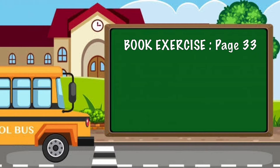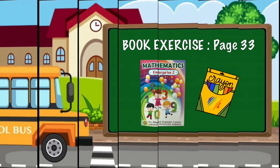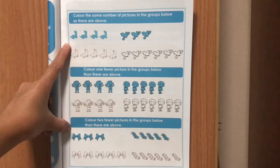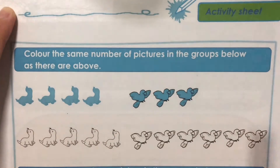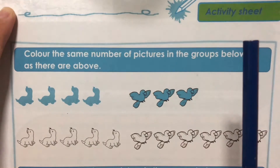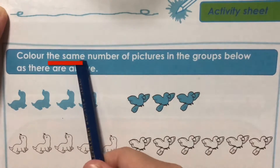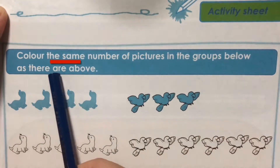For our book activity, please read your mathematics book and get your colors. Open your books to page 33. You can choose any color you'd like to use. Let's read the instruction: Color the same number of pictures in the groups below as there are above.